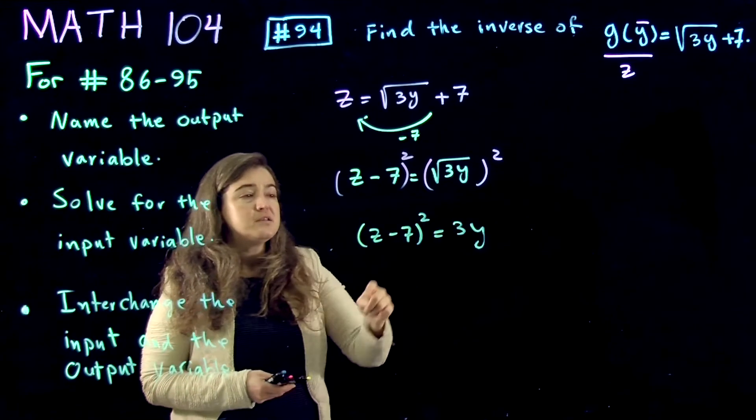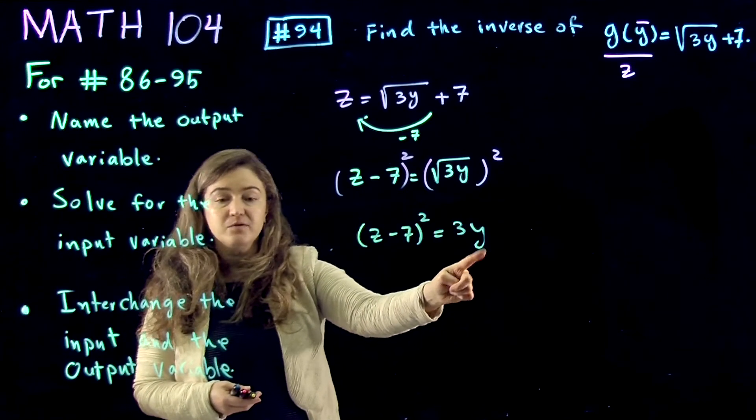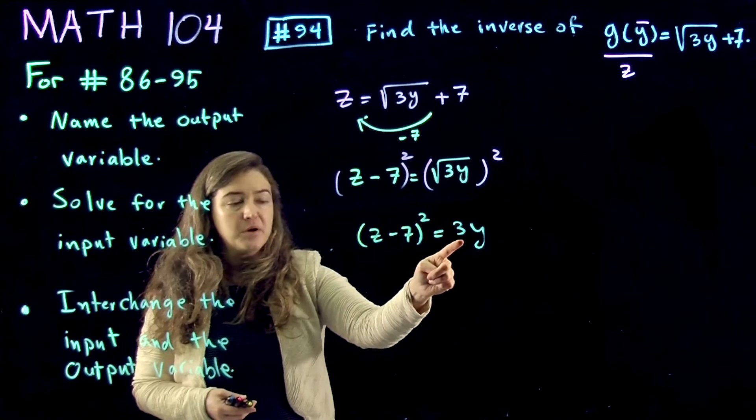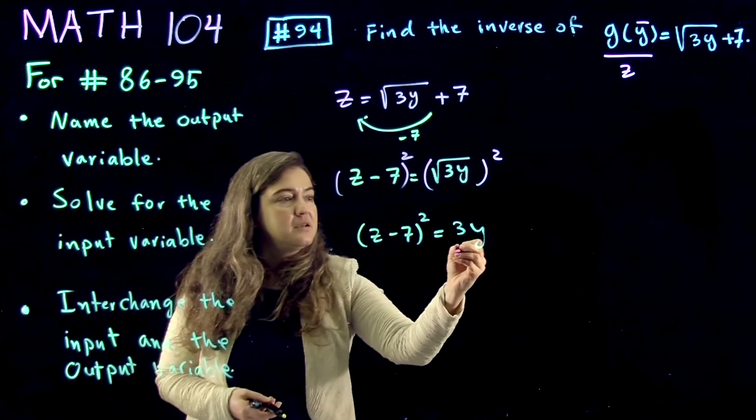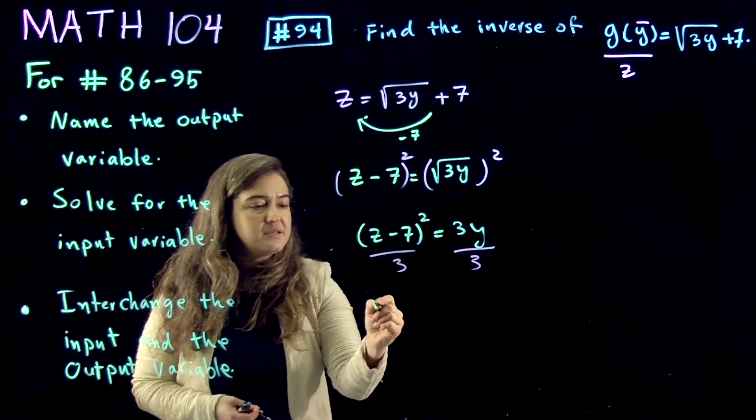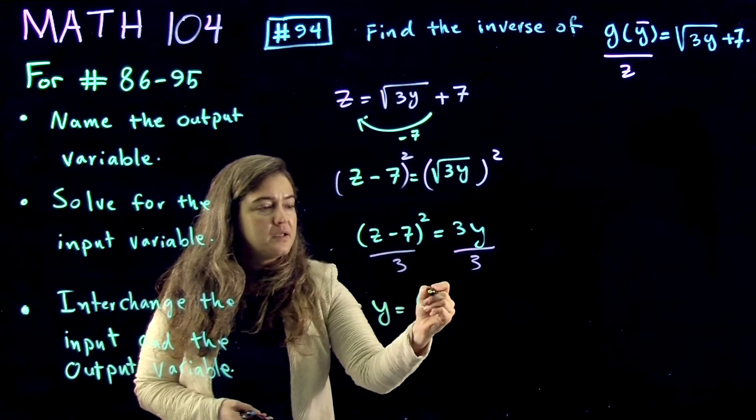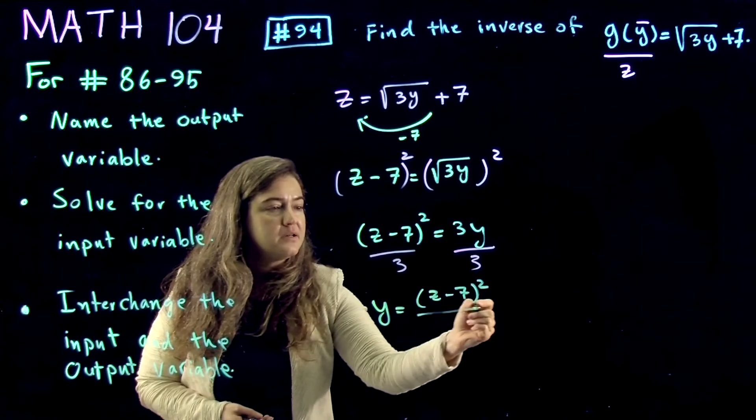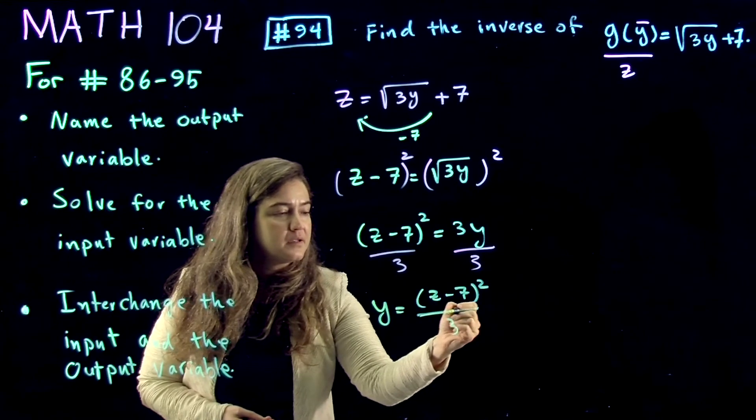Now one more step left to solve for input variable - that is dividing by what multiplies y, which is 3. So y is equal to z minus 7 squared divided by 3.